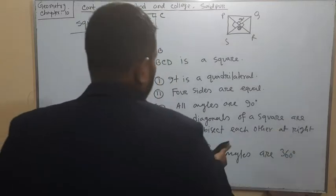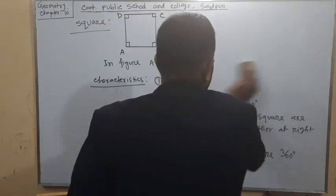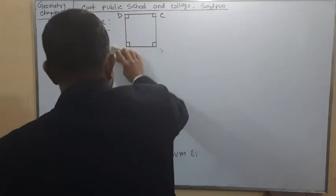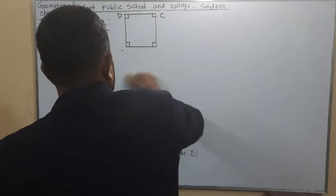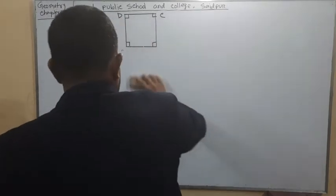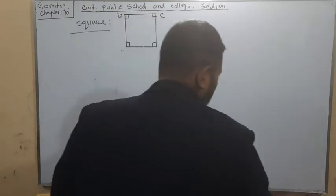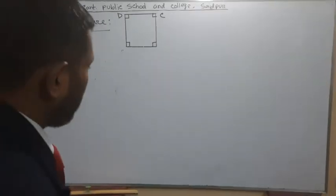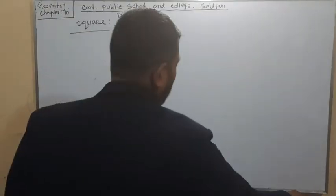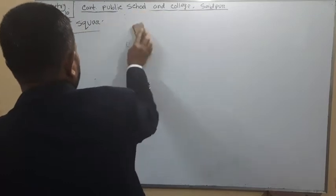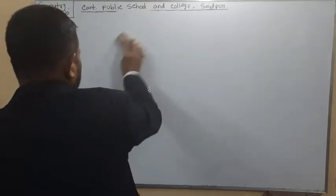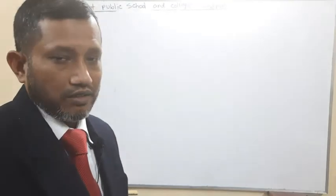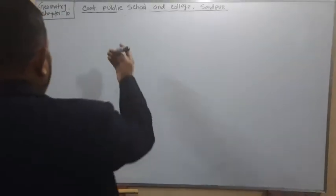Now I will discuss about parallelogram. Dear learners, if you have to draw a square and only the length of one side is given, then you can draw a square easily. Suppose the length of each side of a square is 5 centimeters or 4 centimeters — then you can draw the square. Now, parallelogram.